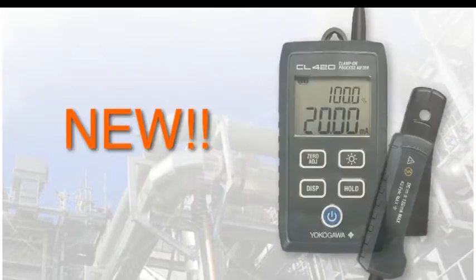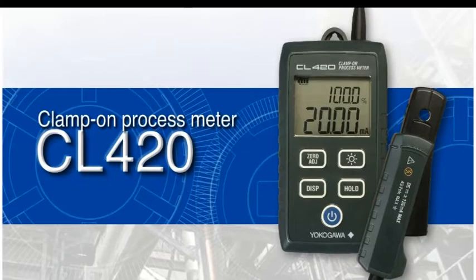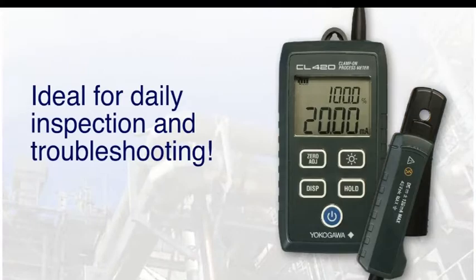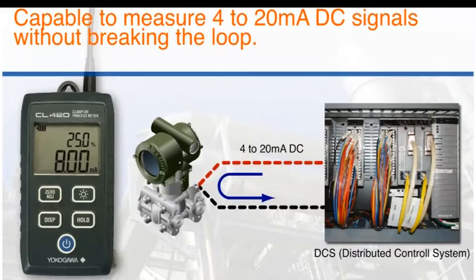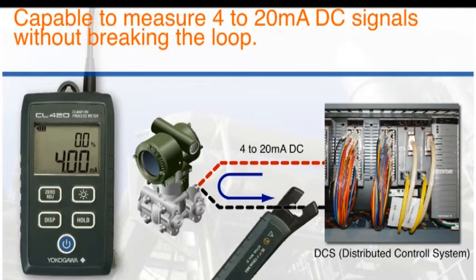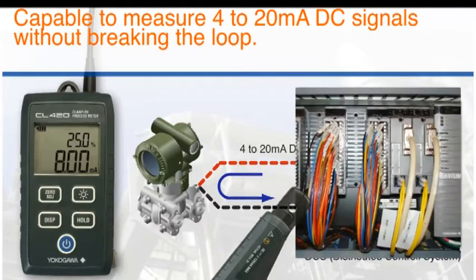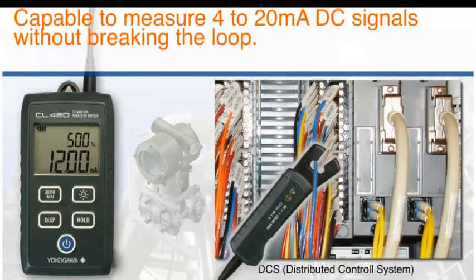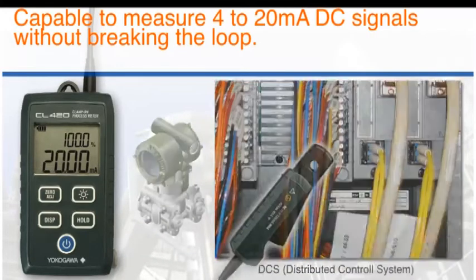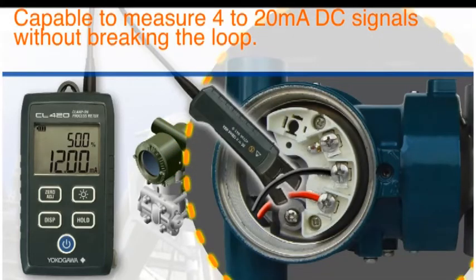Introducing the new Yokogawa CL420 clamp-on process meter. This unit is ideal for the daily inspection and troubleshooting of process control loops. With its non-intrusive clamp-on measurement capability, it is very easy to interrogate control signals with no effect on the control system.